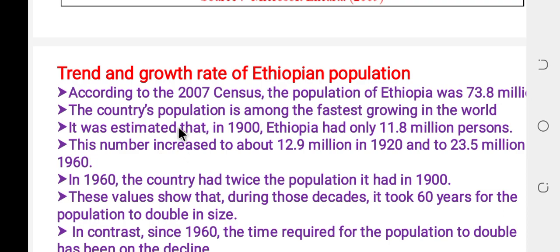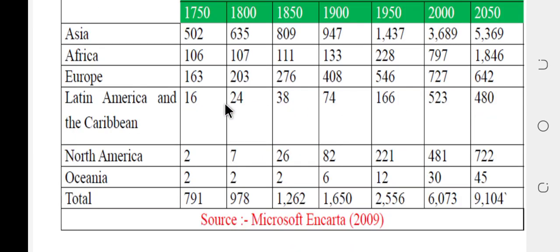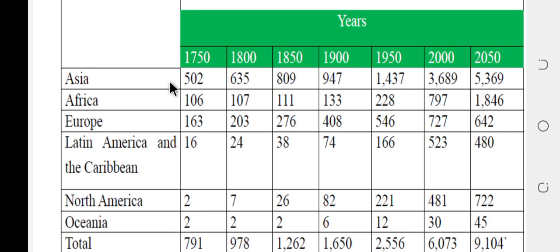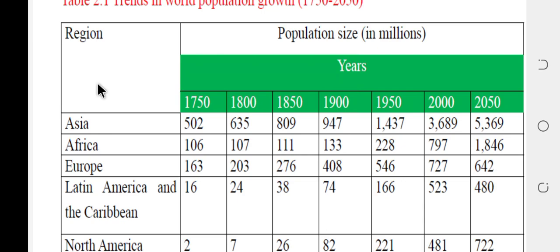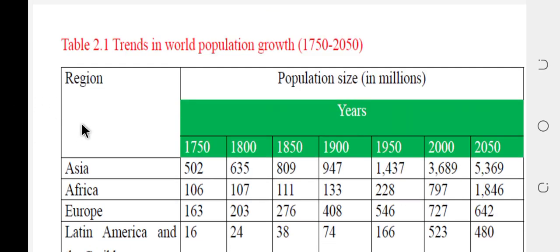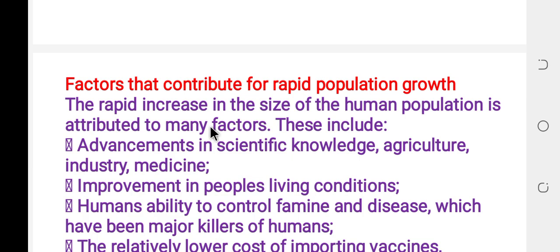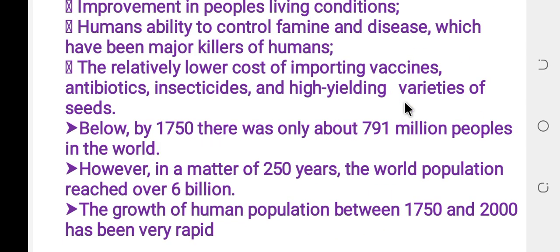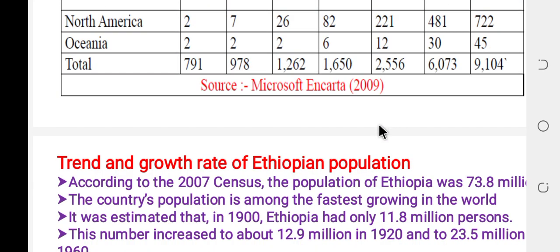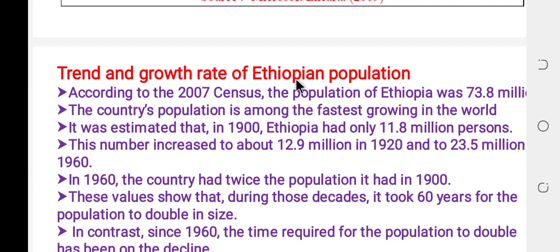The trend and growth rate of the Ethiopian population is a very important topic. When we look at the Ethiopian population, we can see the factors driving rapid population growth, with a minimum growth of 10. The trend and growth rate of population in Ethiopia will be examined further.